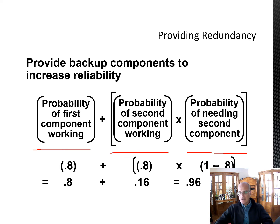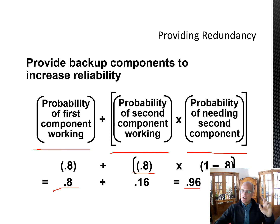So with components at 0.8 reliability each: 0.8 plus 0.8 times 0.2 equals 0.8 plus 0.16, which equals 0.96. Just by putting in one backup piece we've increased the probability from 0.8 to 0.96. Eighty percent of the time the primary works, and if it fails, the backup works 80% of the time as well — giving us 96% reliability overall.